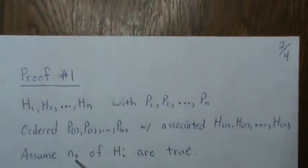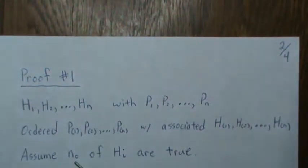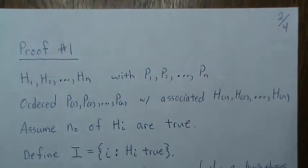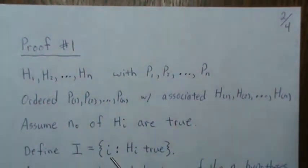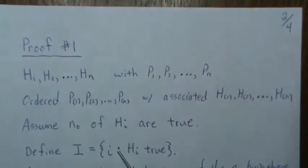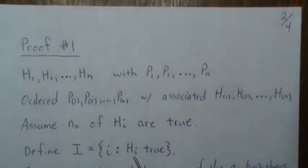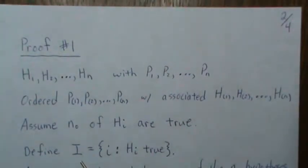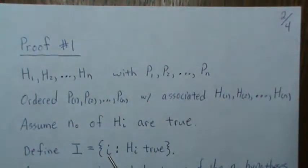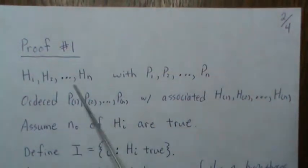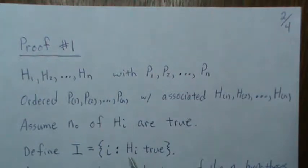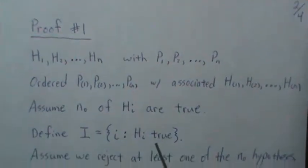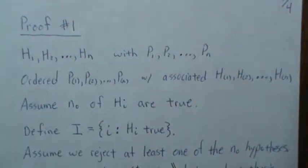Now n₀ is less than or equal to n. We define an index set that takes on the values 1 through n, and index i is only included if H_i is true. So the number of elements in this set is n₀. This set may contain, for example, 1, 3, 7, 8, 9, and n — it's a subset of 1 through n containing only the true hypotheses. Now let's assume that we reject at least one of the n₀ hypotheses, meaning we've committed a type one error.